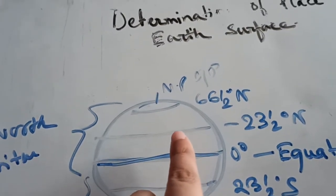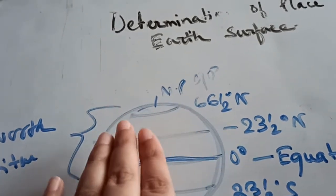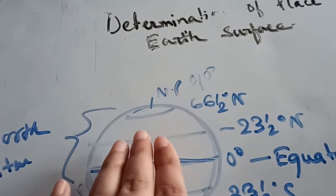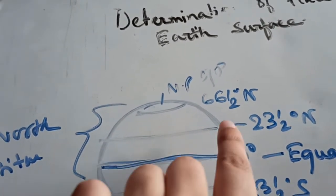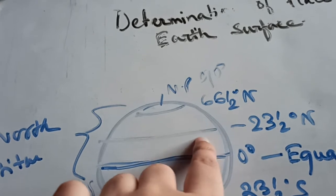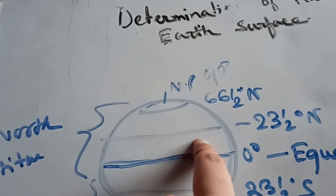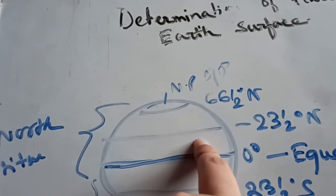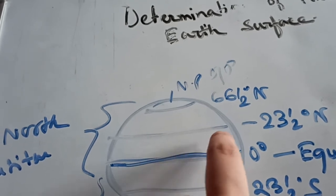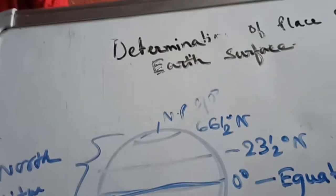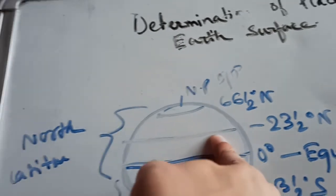On 21st June, during the summer solstice, the direct rays of the sun fall on the Tropic of Cancer, that is 23.5° north. It lies in the northern hemisphere.